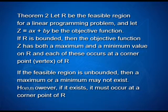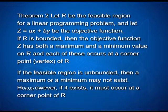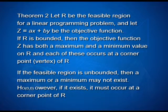Theorem 2 says that if R is the feasible region for a Linear Programming problem and Z equals Ax plus By is the objective function, and if this region R is bounded, then the objective function Z has both a maximum and a minimum value on R, and each of these occurs at a corner point of region R. But if the region is unbounded, then a maximum or minimum may not exist. However, if it exists, it must occur only at a corner point of R.